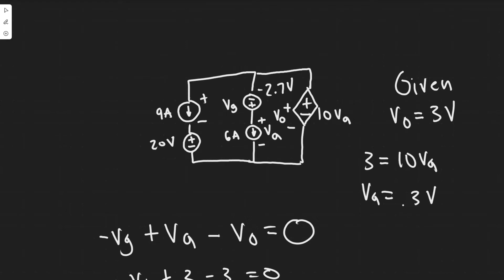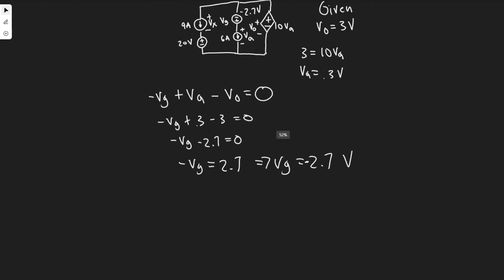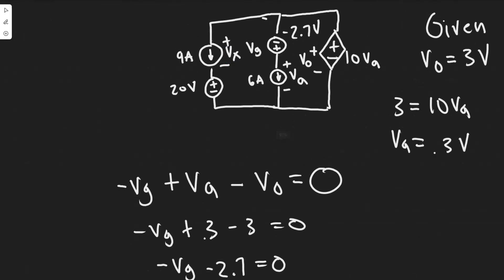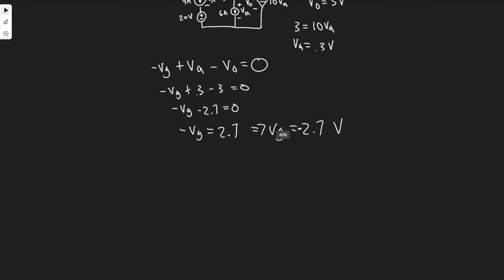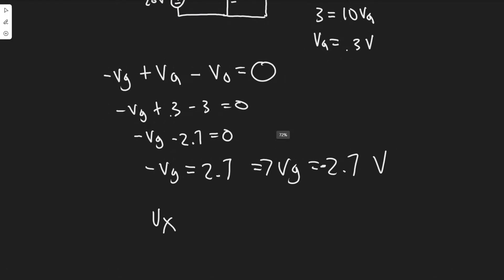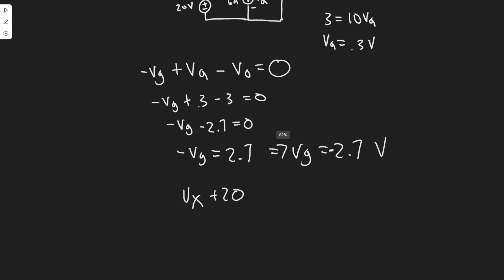To find the power developed, we need the voltage across every source. I'm going to label this voltage Vx. To find Vx, just like on the last loop, we apply Kirchhoff's voltage law again to this loop. Starting with positive Vx, then we have plus 20 volts for the 20-volt source, then minus VA which is 0.3.